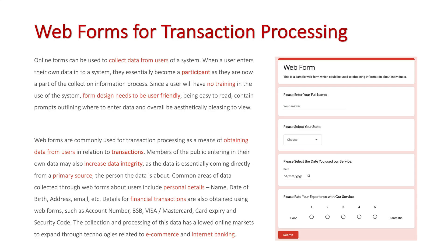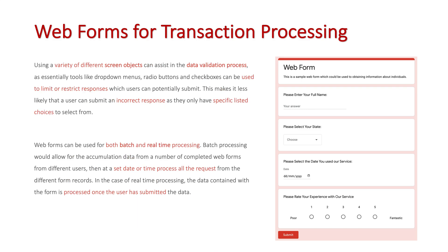You just enter your required data into the appropriate text boxes, drop-down menus, and radio buttons, and through doing that it gets sent to the database of the actual system you're using and then gets transacted. The backbone of all this is different screen objects, as tools like drop-down menus, radio buttons, and checkboxes can assist in the data validation process by limiting or restricting responses a user can potentially submit.